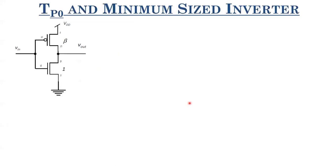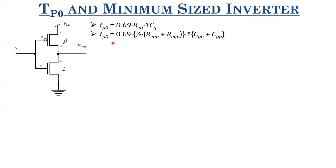Let us understand what exactly TP0 is and what exactly is a minimum sized inverter. For minimum sized MOSFETs, L = L_min and W = W_min. TP0 was simply 0.69·R_eq·γ·CG. Expanding: TP0 = 0.69·(1/2)·(R_eq_N + R_eq_P)·γ·(CGN + CGP), where CGN is the gate capacitance of the NMOS and CGP is the gate capacitance of the PMOS. Why are we doing this exercise? Because ideally we size the PMOS for symmetric behavior and for achieving large noise margins.